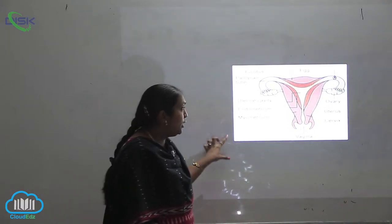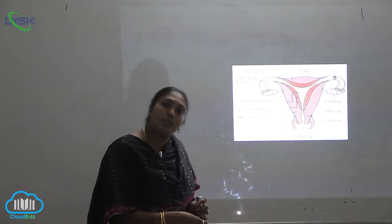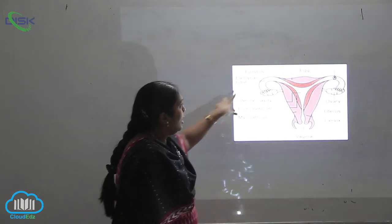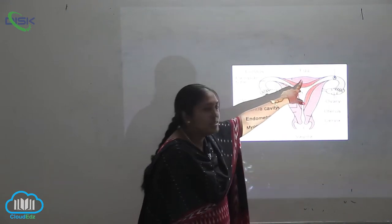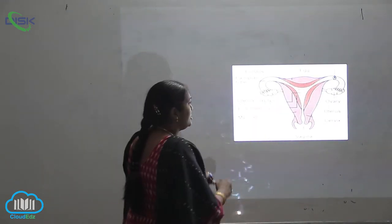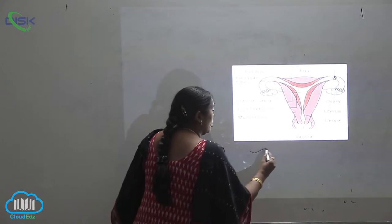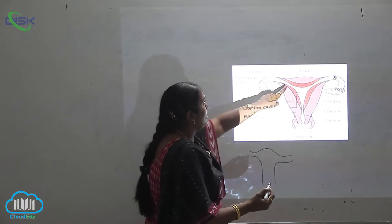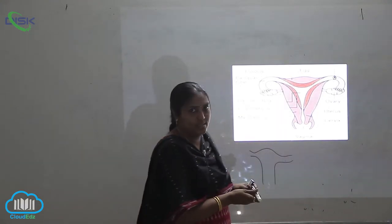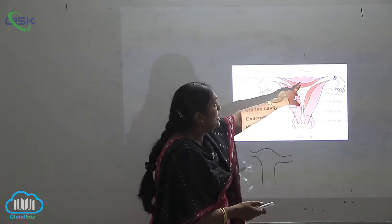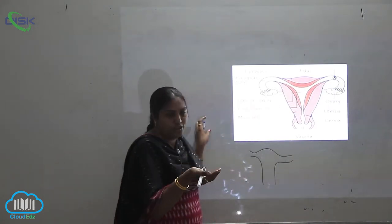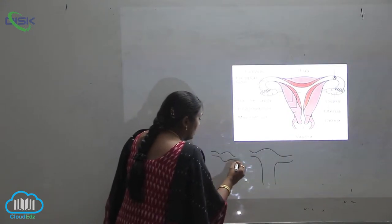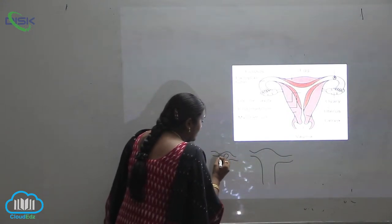This is the longitudinal section of the female reproductive system. You can see the anterior region where there is a swollen-like structure. This swollen-like structure is called the fundus, where the egg will be lodged and settle.